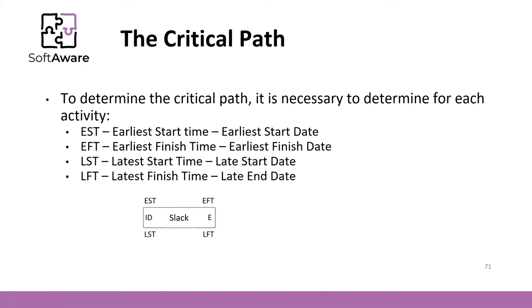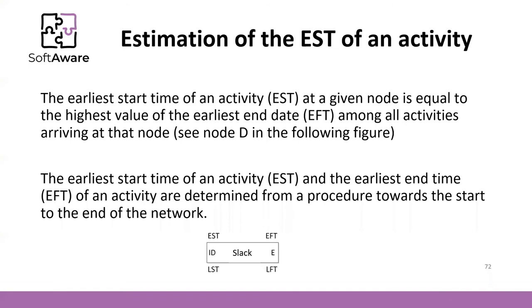Let's see how we can reach these times and the critical path. To determine the earliest start time and the earliest finish time, we start by calculating the earliest start time of an activity, which is equal to the highest value of the earliest end date among all activities arriving at that node, as we will see in the next picture with node D. The earliest start time and earliest end time are determined from a start-to-end procedure through the network. We can calculate the earliest finish time as: earliest start time plus duration, minus one unit.